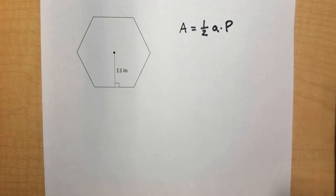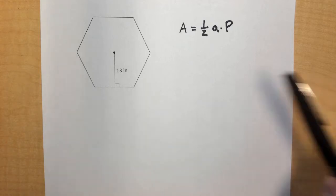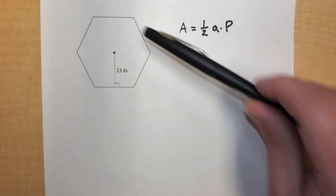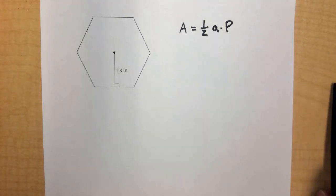But first, before we just start solving for this particular shape, in this case we have a hexagon, we need to go over a couple of vocabulary terms. First of all, we're dealing with a regular polygon here. A regular polygon means that all the sides are going to be the same length, and all the interior angles are all going to be the same as well.